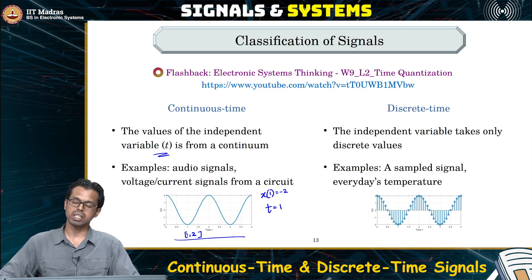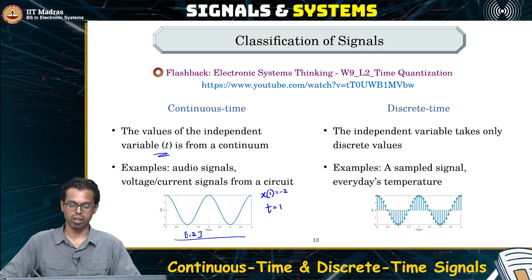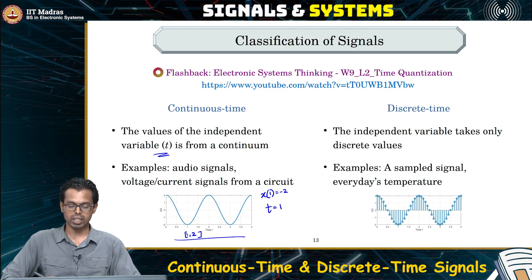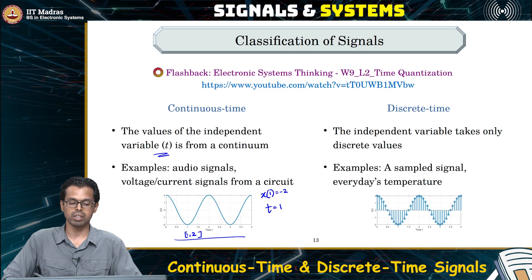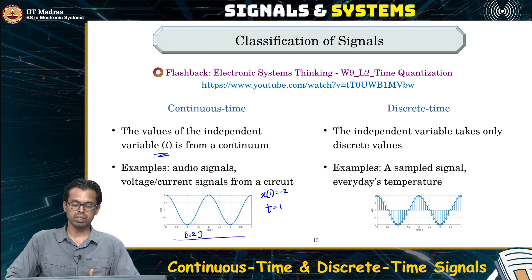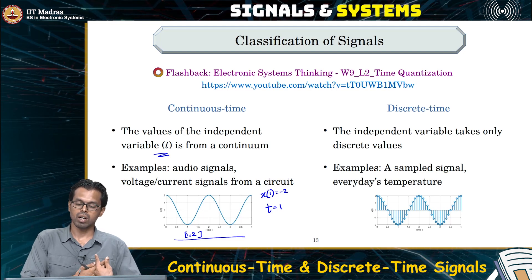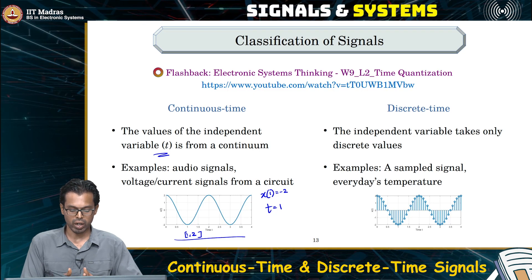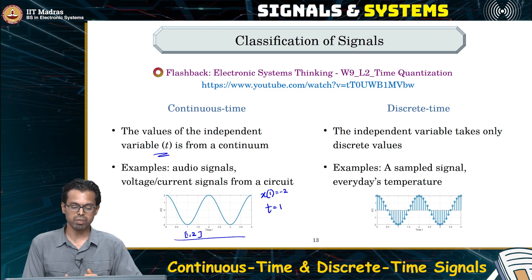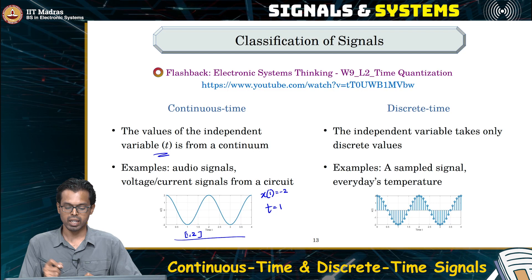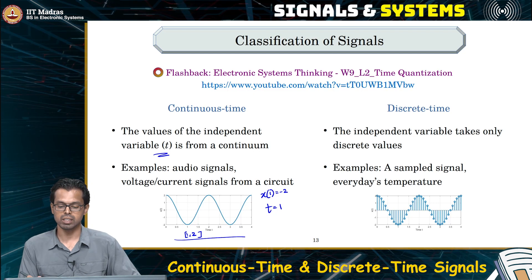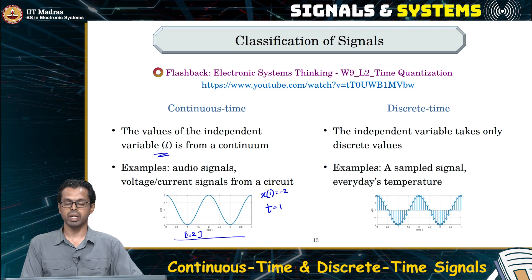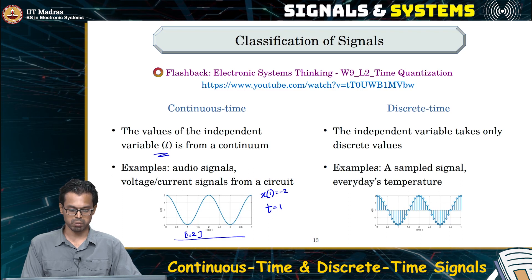There is always a number which is really, really small. It is impossible to say what is the next time instant when it is a continuous time signal, because there is a continuum of time between 1 and 2. There is no way of saying that after 1, my next time instant is this. That is the main important property of a continuous time signal.